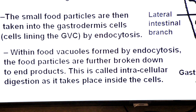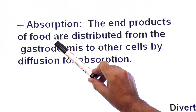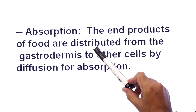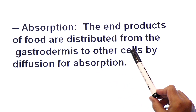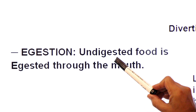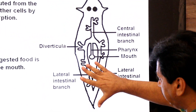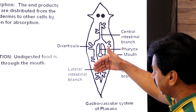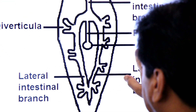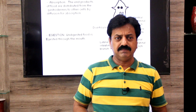So first extracellular digestion, then intracellular digestion. Now for absorption: the end products such as amino acids, fatty acids, and glycerol are distributed from the cells of gastrodermis — the inner layer — to other cells by the process of diffusion, aided by the diverticula. Finally, undigested food is egested through the mouth. A system with only a single opening serving for both ingestion and egestion is called an incomplete digestive system.